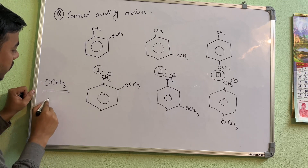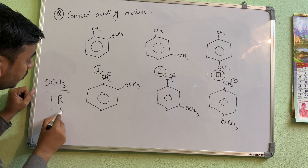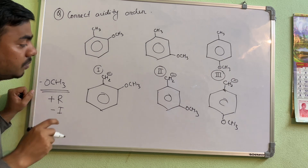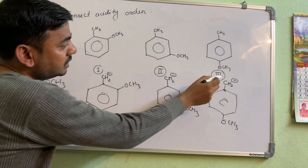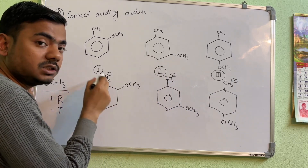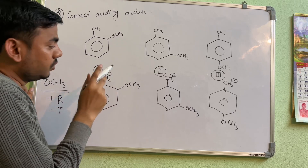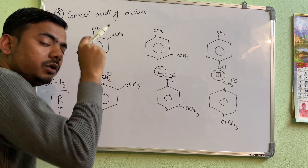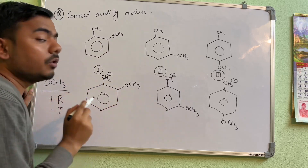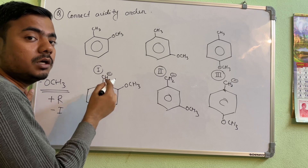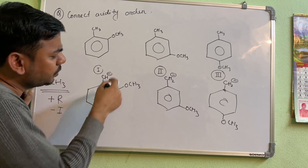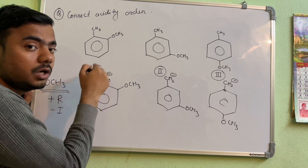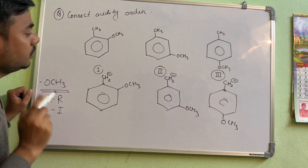Now you should know the property of the methoxy group (OCH₃). What type of property is it showing? It shows +R because oxygen has a lone pair, and it also shows −I because oxygen is electronegative. So it shows both +R and −I. But remember — this is a negative charge (CH₂⁻). To make it stable, you have to reduce this charge. To reduce a negative charge, you need an electron-withdrawing group, not an electron-donating group.